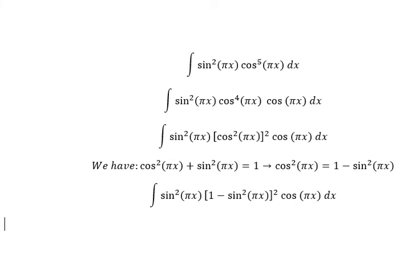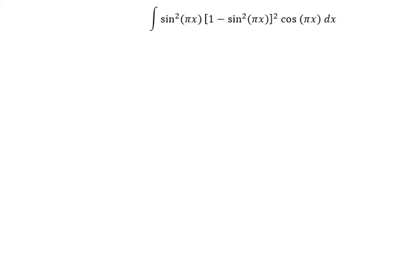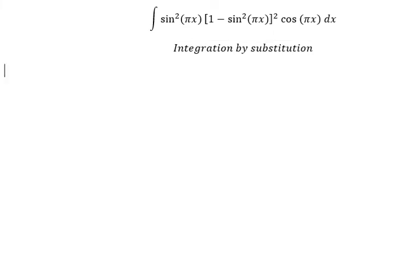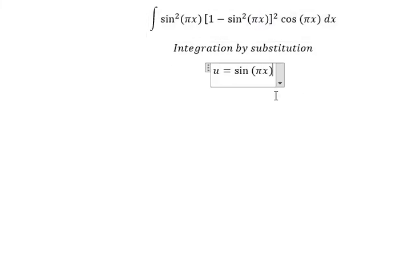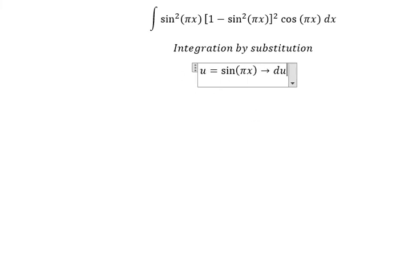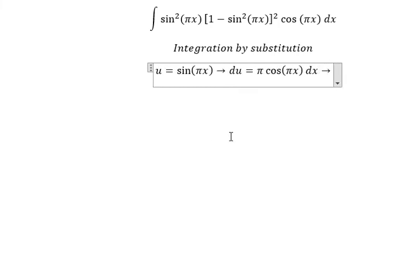Now I need to change cosine bx squared into one minus sine bx squared. We need to use integration, so I will let u equal sine bx. We need to do the first derivative for both sides, so we get du equal to b cosine bx dx. Because we don't have b in here, we need to divide both sides by b.